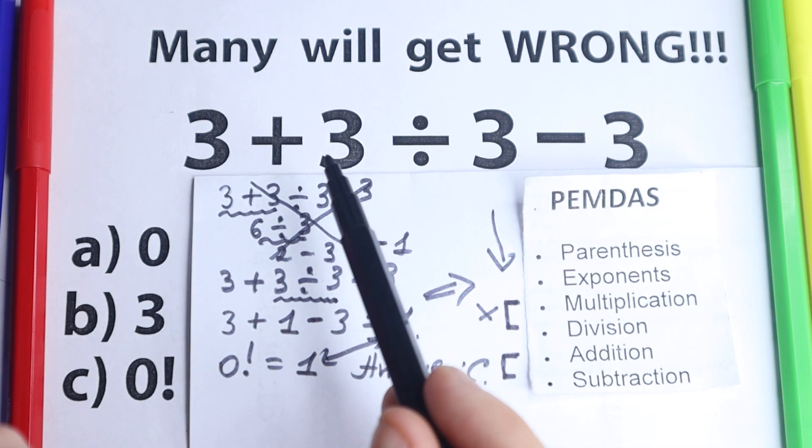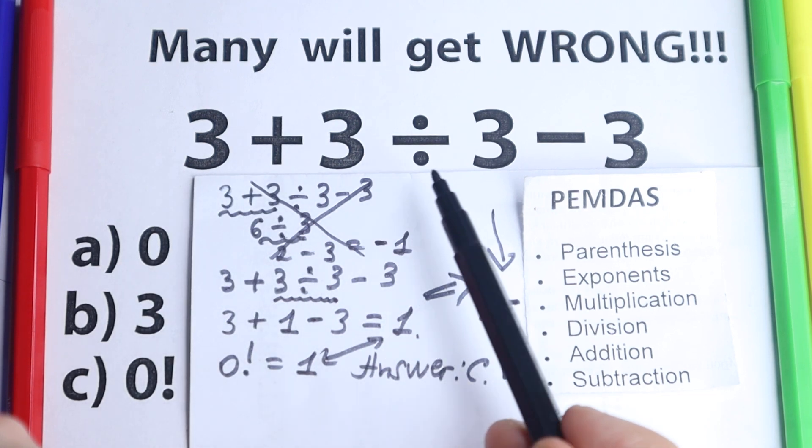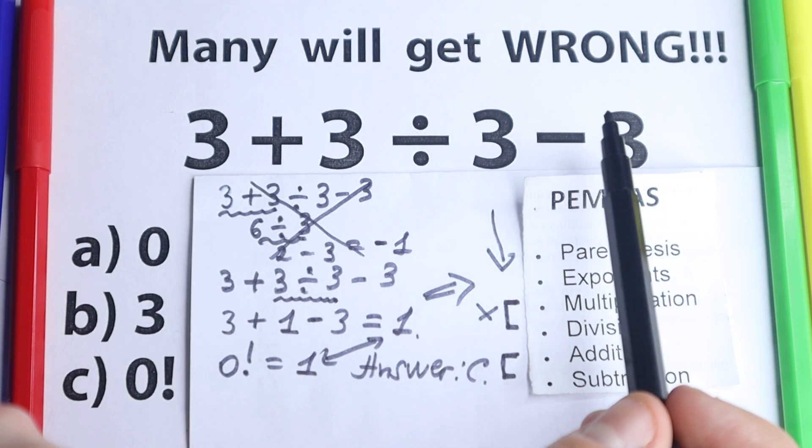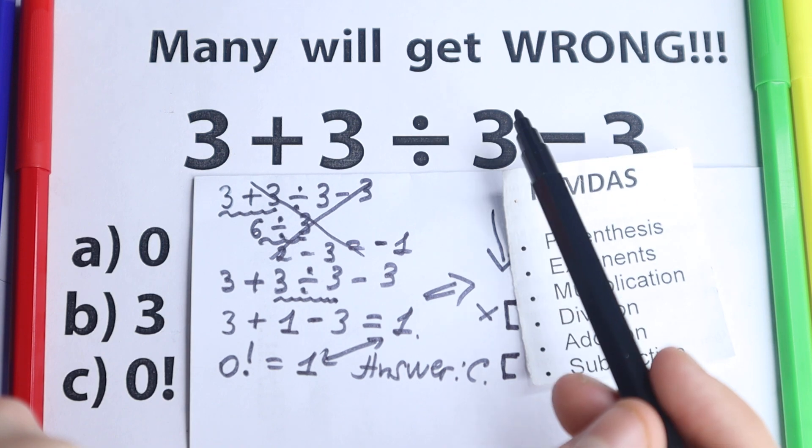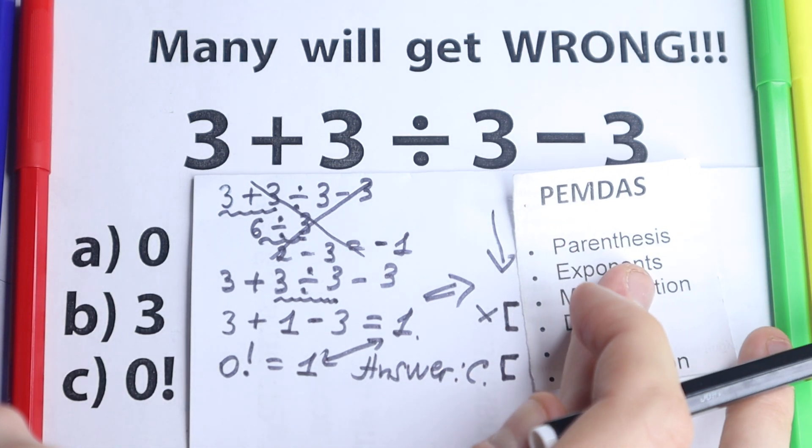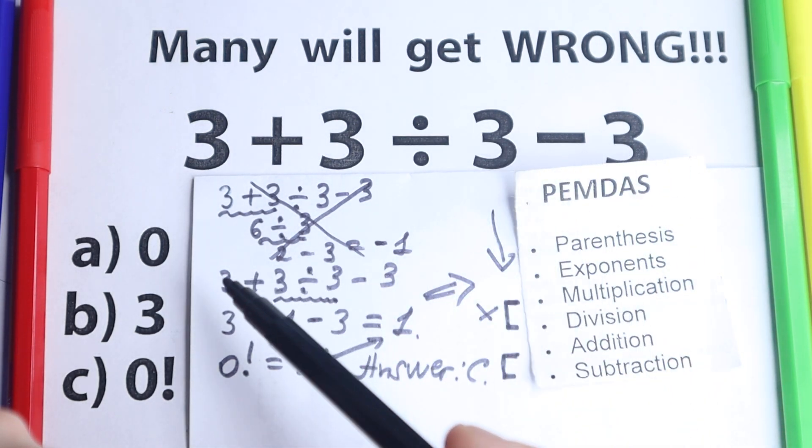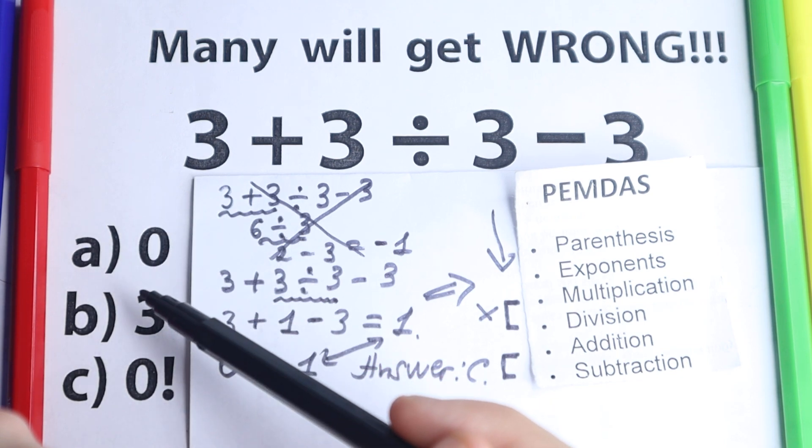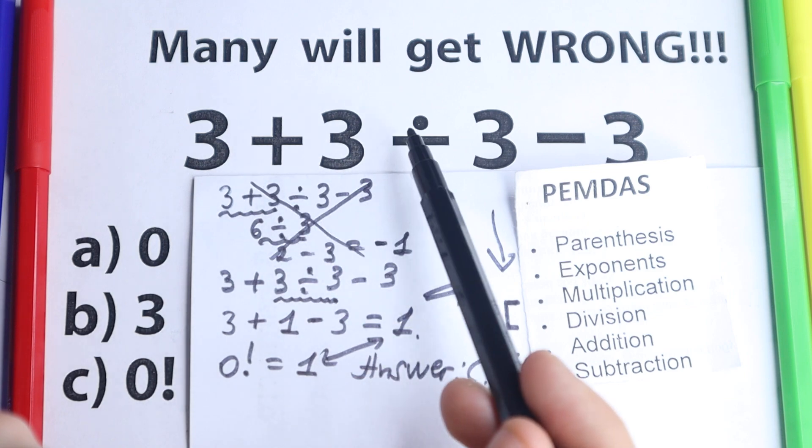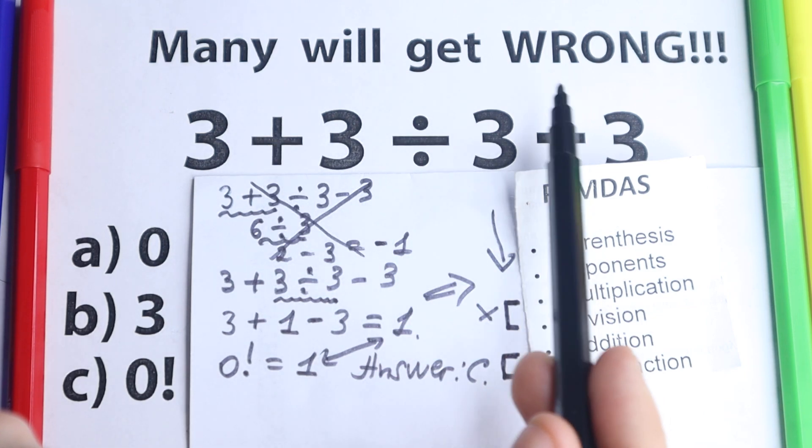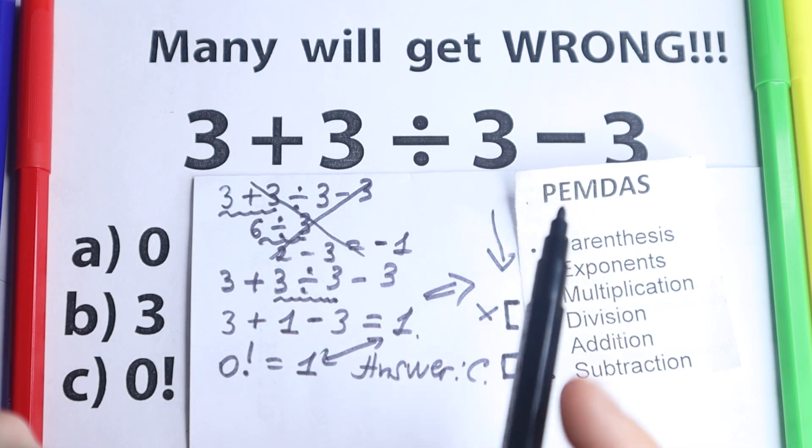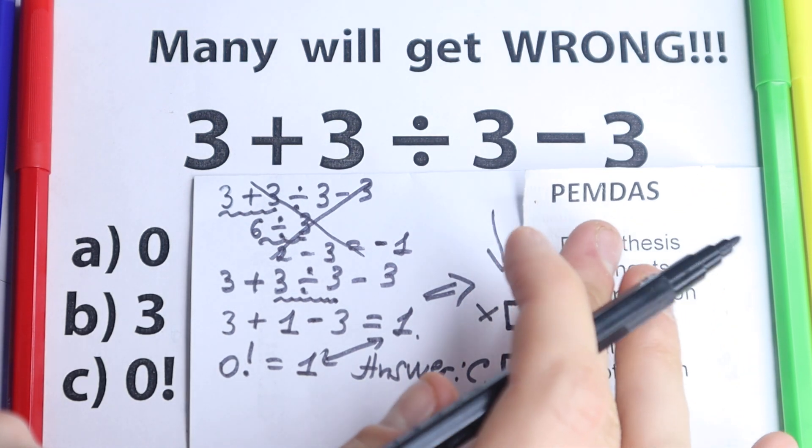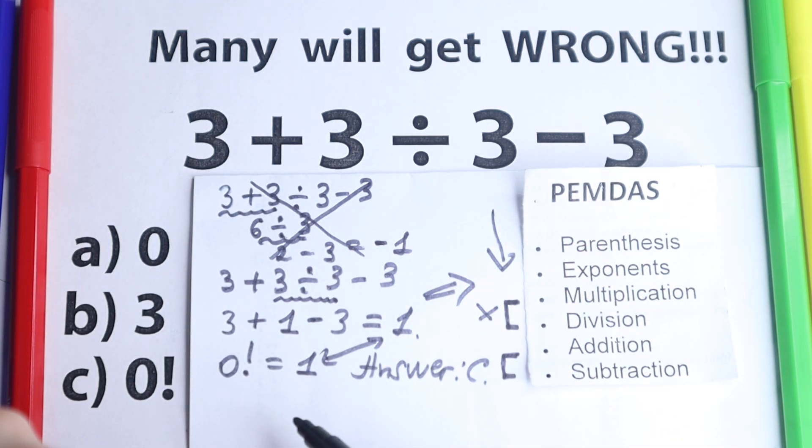Forget about this wrong solution, about this zero. Some students, maybe one or two percent, solve it like that. They say 3 minus 3 equals zero, and then they somehow divide it. Some students solve it as three, because they say a lot of threes, divide, plus, minus right here. But as you can see, according to PEMDAS, the correct answer is option C, zero factorial.